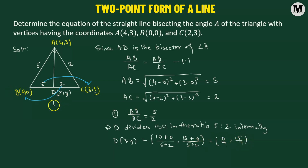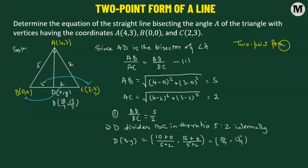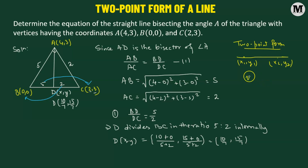The coordinates of point D will be 10 over 7 comma 15 over 7. Now that we have the coordinates of point D, we can easily find out the equation of AD by using the two-point form of a line. The two-point form states that if two points have coordinates x1, y1 and x2, y2, the equation of the line through them is: y minus y1 equals y2 minus y1 divided by x2 minus x1, multiplied by x minus x1.